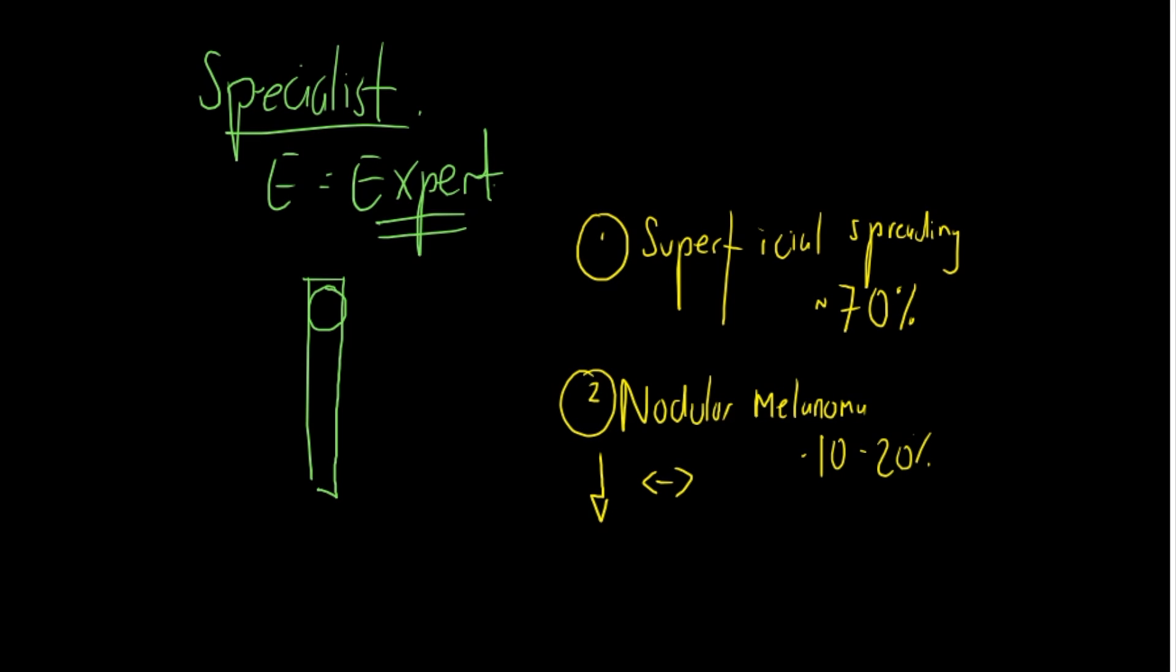It's also important to know that melanomas can be distinguished as to whether or not they're in situ or whether or not they are invasive. Now, by describing a melanoma as invasive, it means it's bridged the basement membrane, which is the border between the epithelial cells and the underlying connective tissue. This can become problematic because these invasive melanomas can spread, and that's obviously a very bad sign.